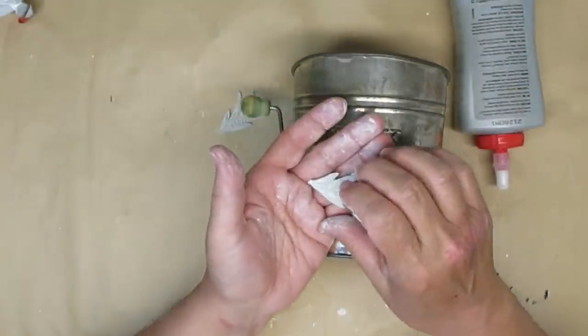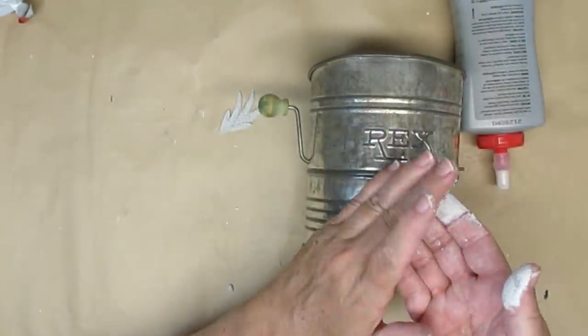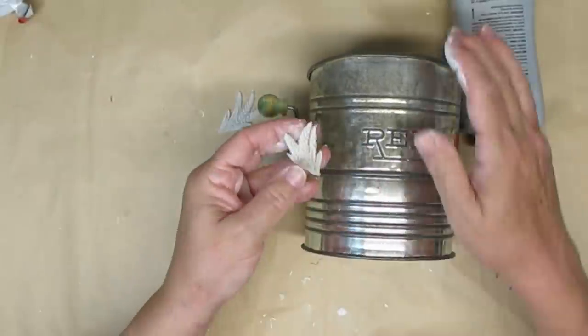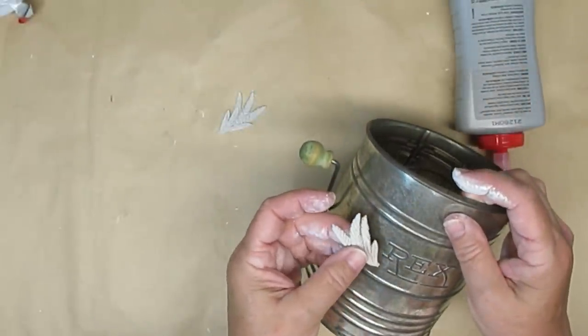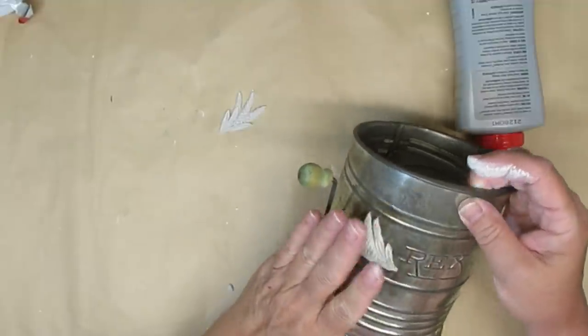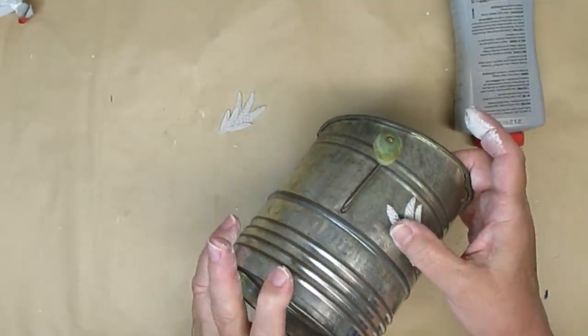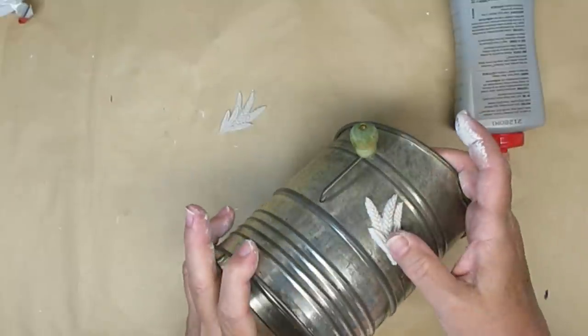I found this old flour sifter at the thrift store, so I thought these little wheat sheaves would be perfect to put on as embellishment. I'm going to just place one on either side of the name and just press them gently in place, making sure that I get all the edges down just like I did for the sheep.